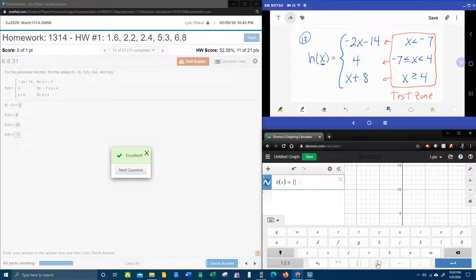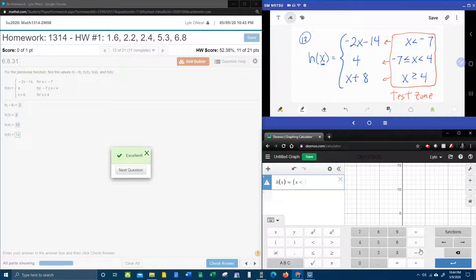And to do a piecewise function, we start with a brace. So that's the keyboard, the ABC, and the braces. And it's condition, colon, function. So x less than negative seven. X is less than negative seven is the condition, colon, the function is negative two x minus fourteen. And then you do a comma and then you do the next condition and the next function. So the next condition is negative seven less than or equal to x less than four. Colon, the function is four. Comma, next condition, x is greater than or equal to four, colon, function, x plus eight.